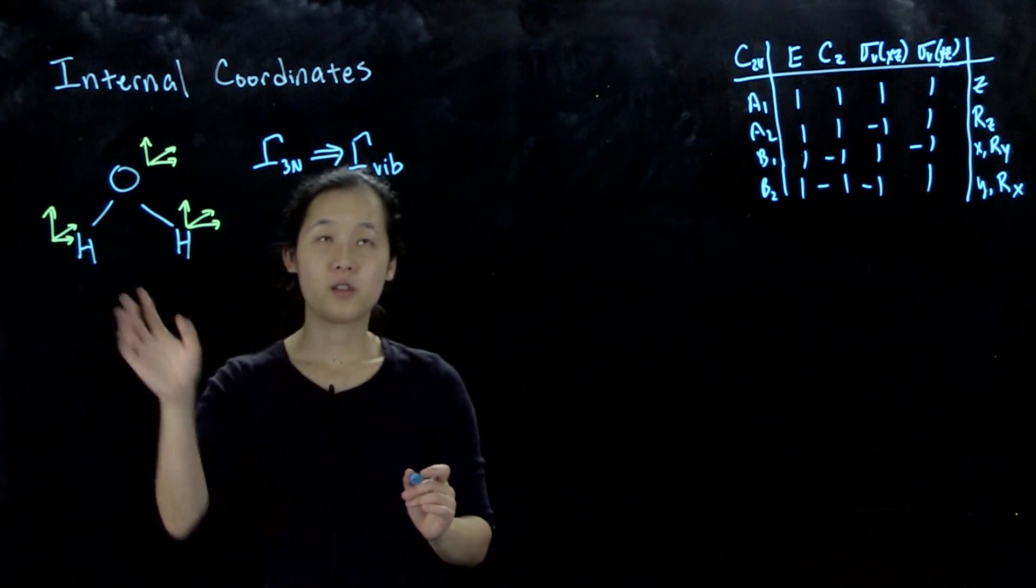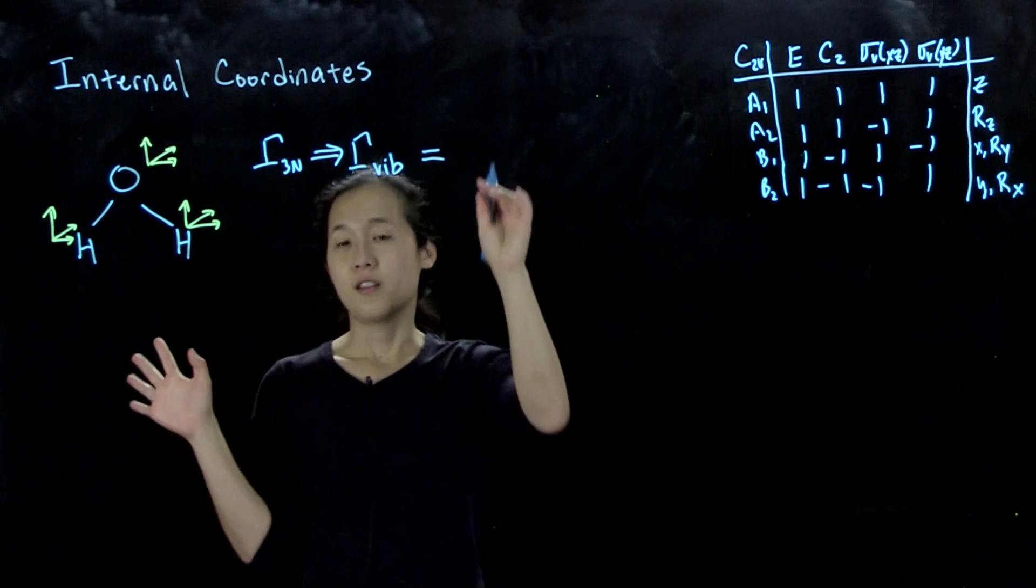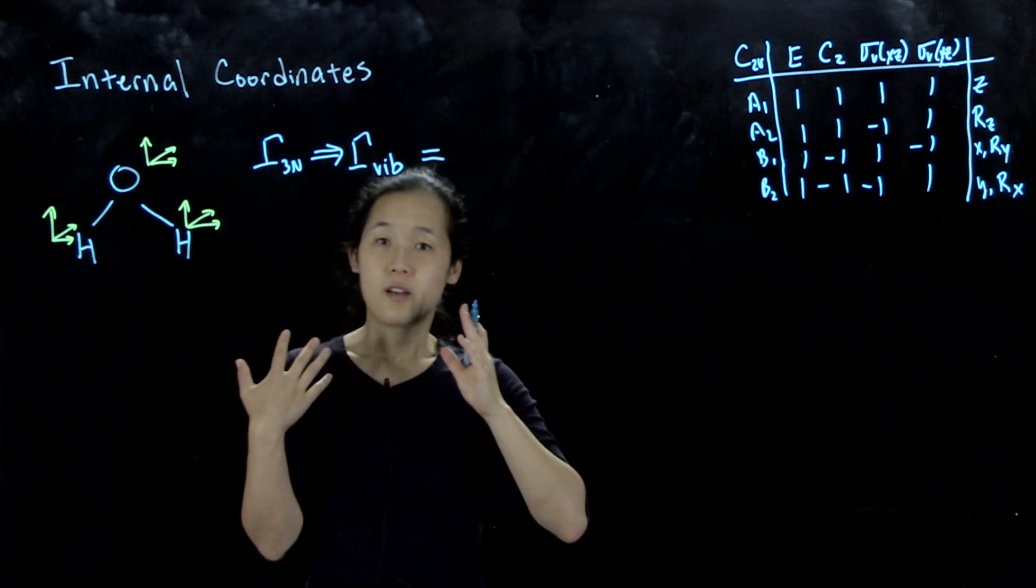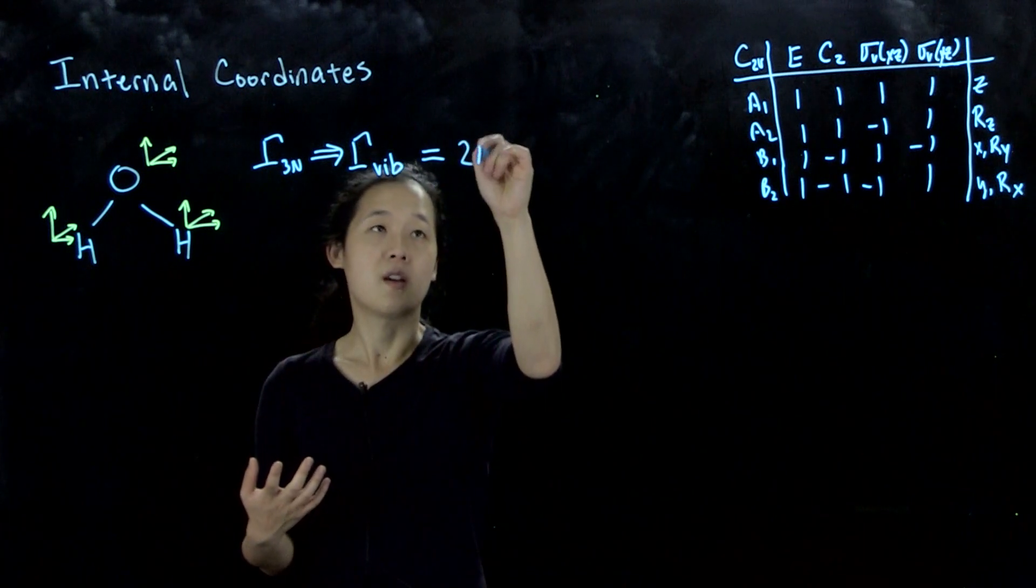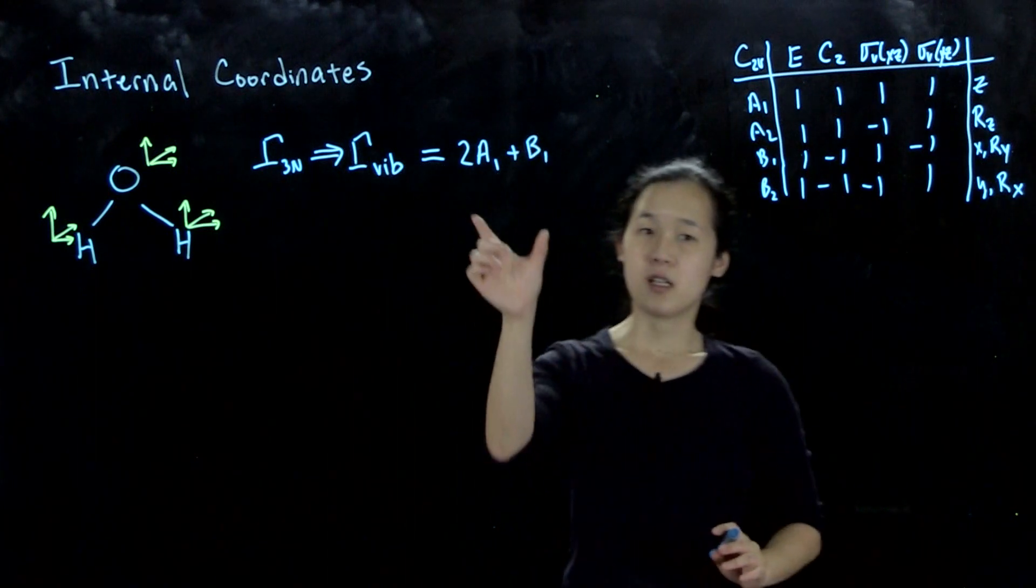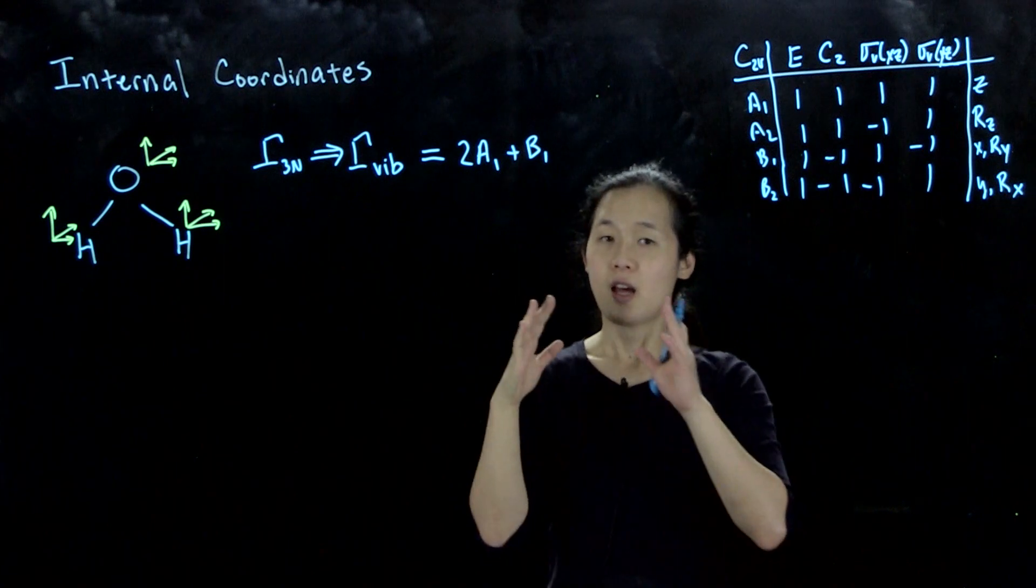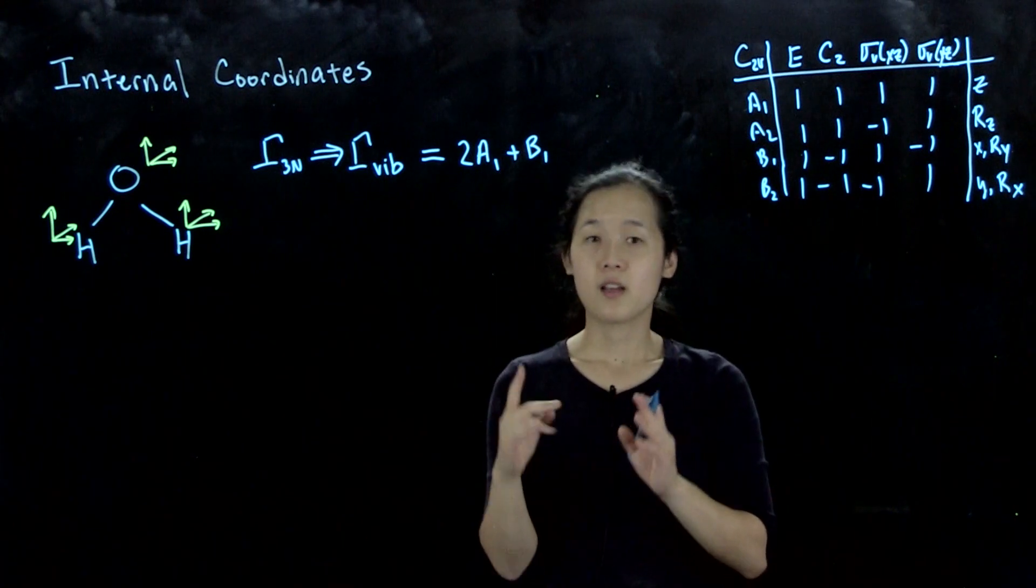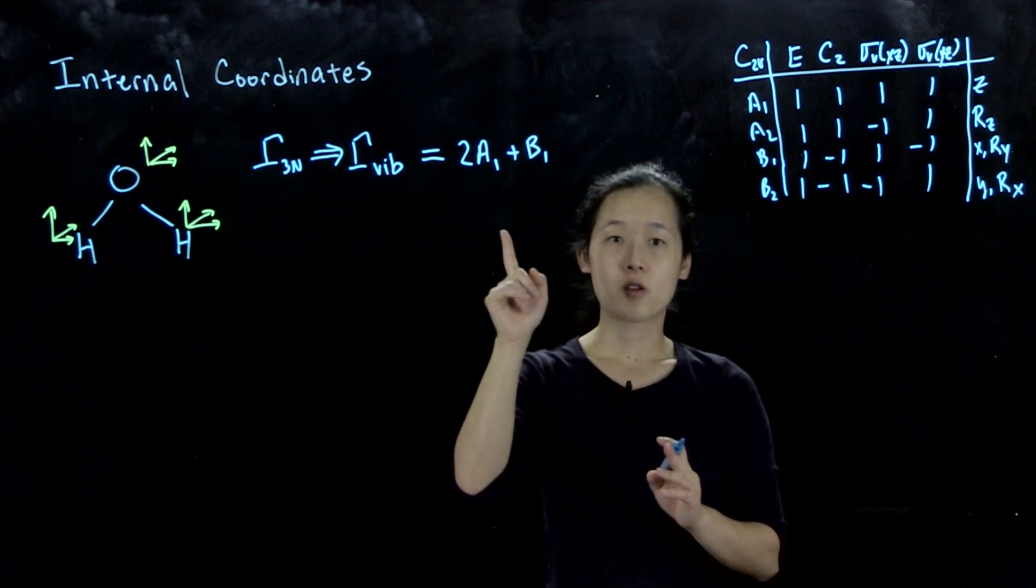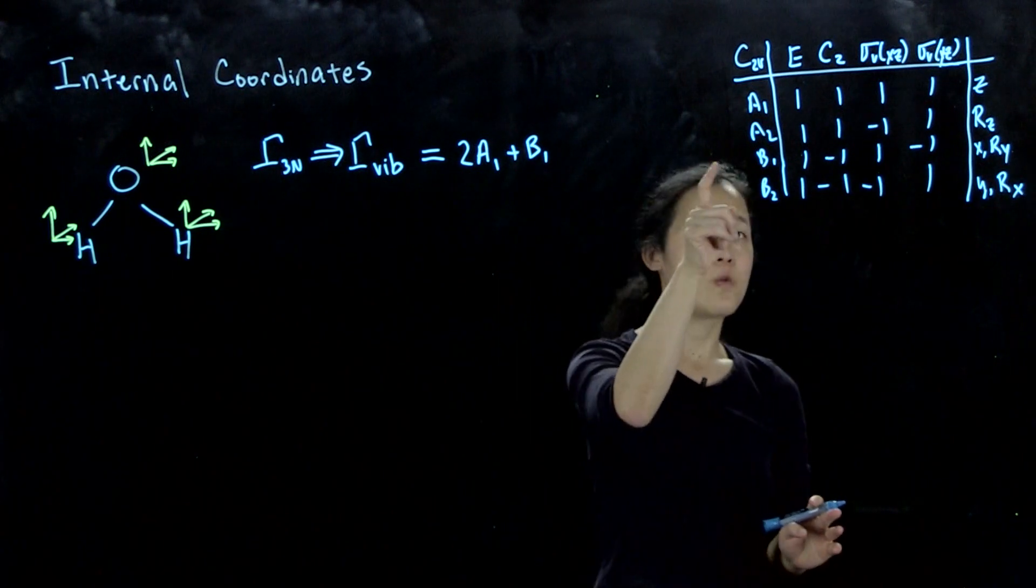For this water molecule we get three vibrational modes that reduce down to the sum of 2A1 plus B1. So we have three vibrational modes, two of them with symmetry that corresponds to A1 and one that has symmetry that corresponds to B1.